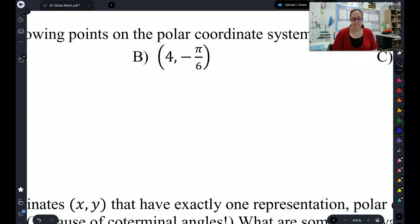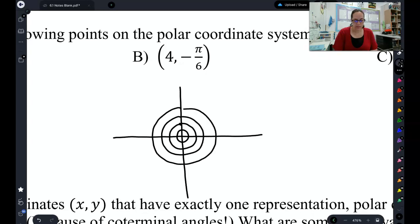Let's try this one. I have a radius of 4 and an angle of negative π/6. So 1, 2, 3, 4. There's my radius of 4 and an angle of negative π/6. Remember, negative angles go clockwise. So that would put me about there. There's that point. Radius of 4 out, angle of negative π/6.